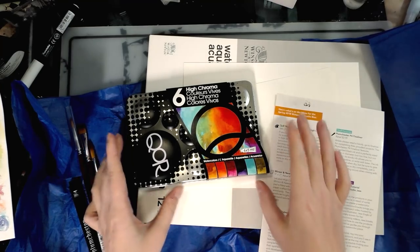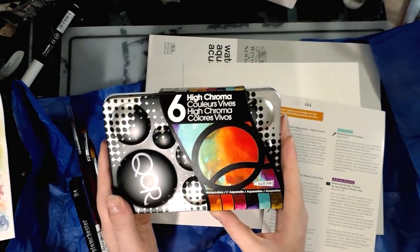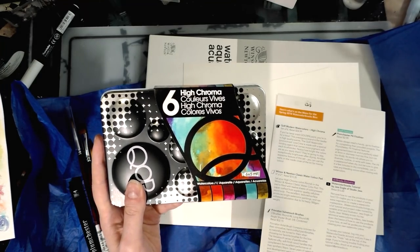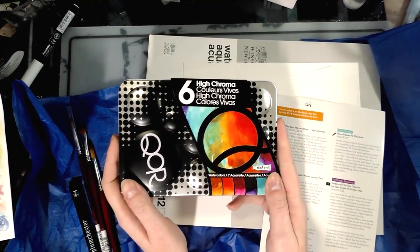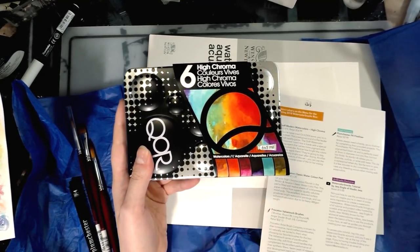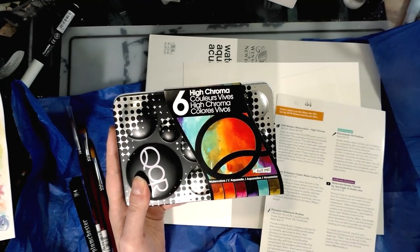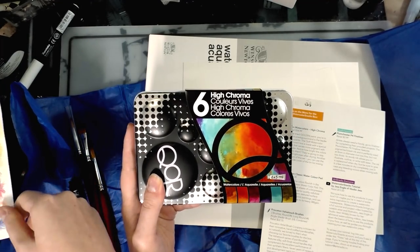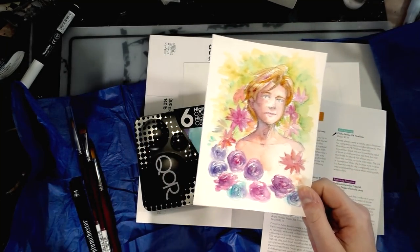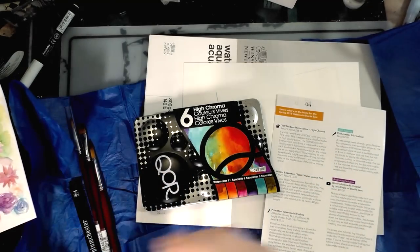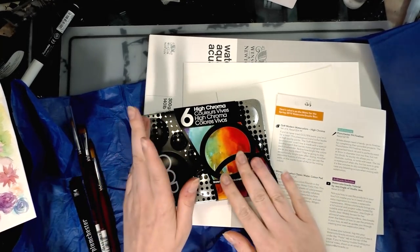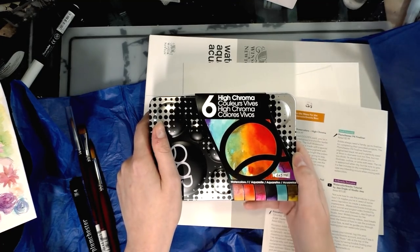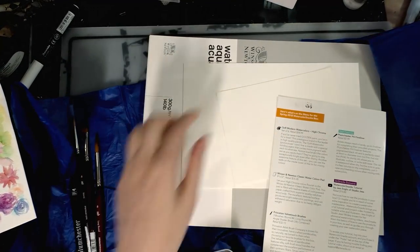The Core modern watercolors are five milliliter tubes and we get six of them. This is the high chroma set, a bunch of synthetic colors. Core has an introductory color set with six colors which might be a better fit if you're not experienced, because those are designed for mixing. These are not colors designed for mixing. My friend Heidi Black said these were incredibly hard to mix.